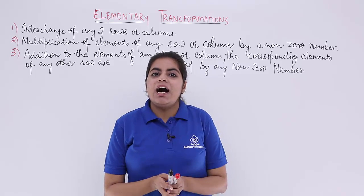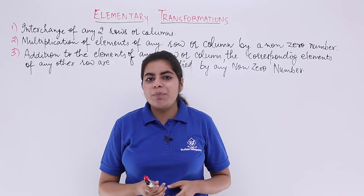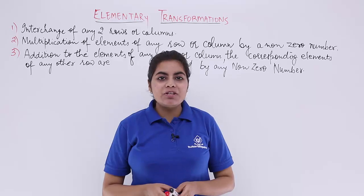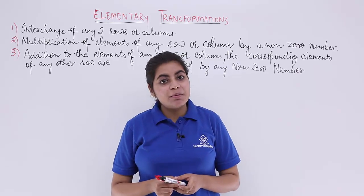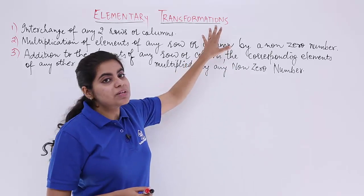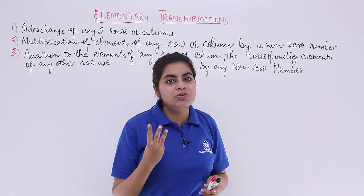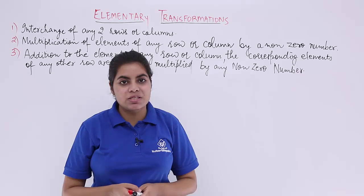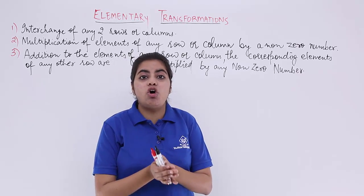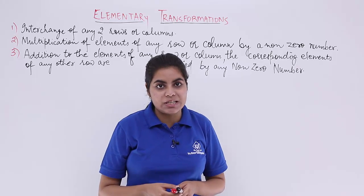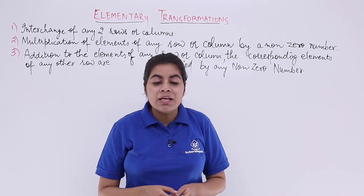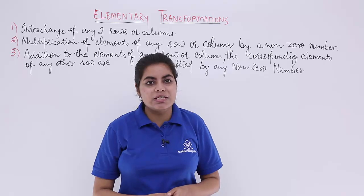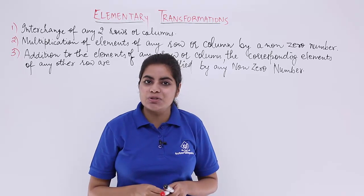In this video, let's see another topic related to invertible matrices — elementary transformations. Elementary transformations are actually of six types: three are row transformations and three are column transformations, adding up to six. These transformations are necessary in order to find out the inverse of a matrix, which we'll be studying in the next topic.